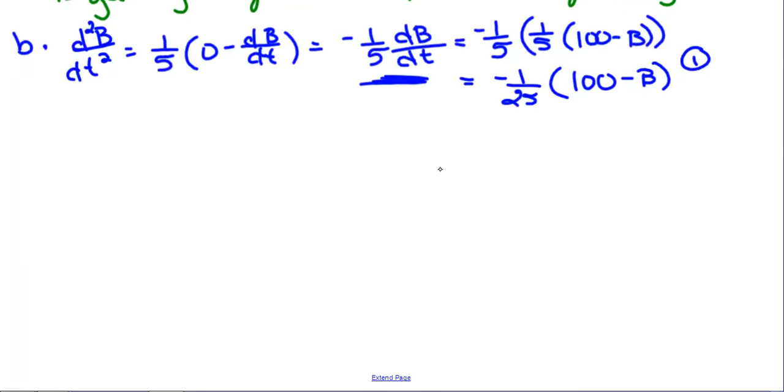That was defined at the very beginning. So this is equal to negative one over 25 times 100 minus B. So we get one point for finding that second derivative in terms of B. You got to do it completely. Okay. You can't stop here. You got to find it solely in terms of B, not in terms of dB/dt. Okay. The second part of the question says, use that to explain why the graph of B cannot resemble the following graph.